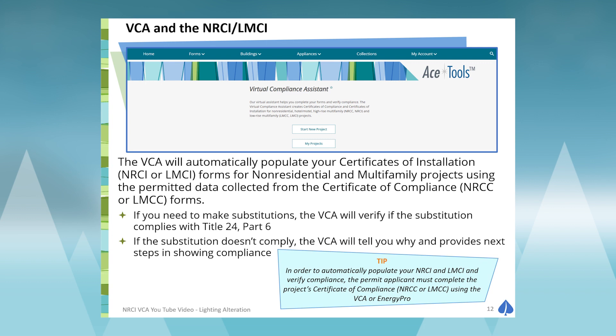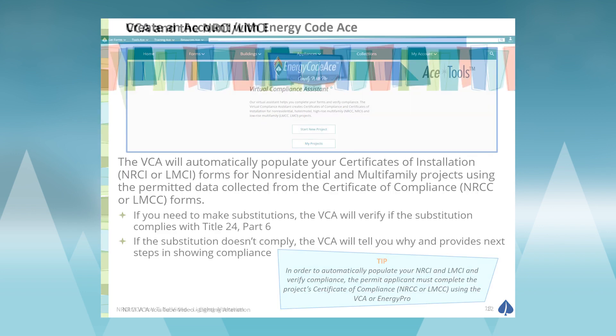The Certificate of Compliance Forms can be a prescriptive form done via the Virtual Compliance Assistant, or via Energy Pro — a third-party software that can complete prescriptive forms and produce performance reports. You can also use CBEC or IESVE to produce performance forms. CBEC and Energy Pro are the only two at this time that produce a compliance ID needed to document the NRCI form.